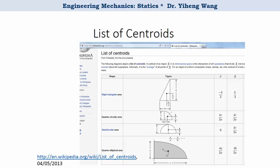The centroid locations for common shapes have long been summarized and can be easily found online or in engineering textbooks or handbooks. For example, here is a screenshot of a Wikipedia page on centroids. You might find this information very useful.